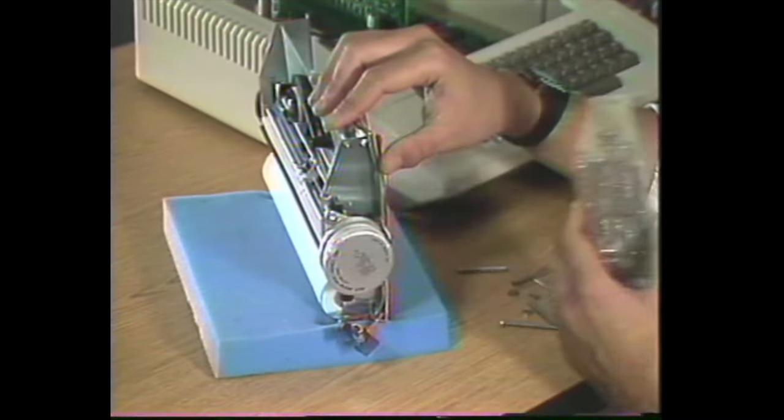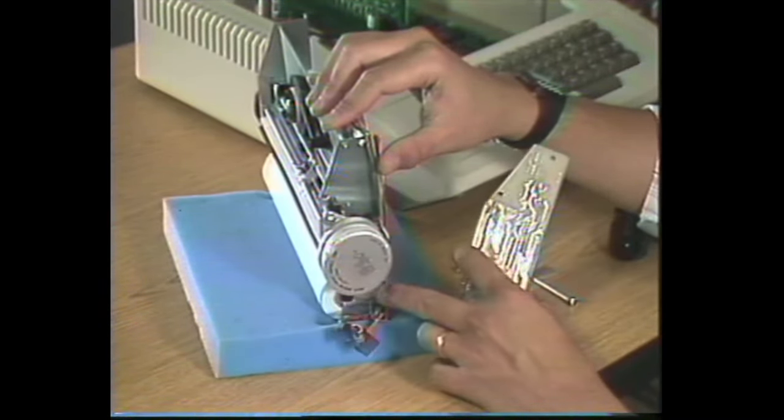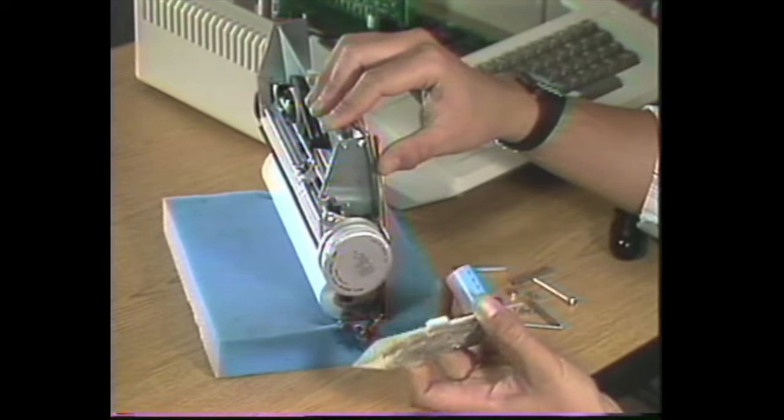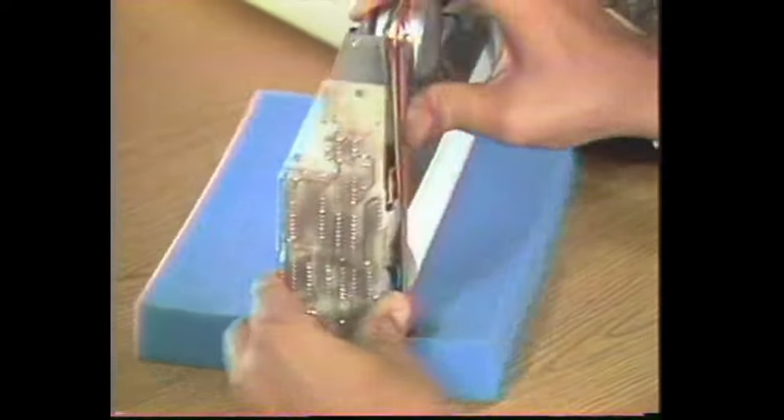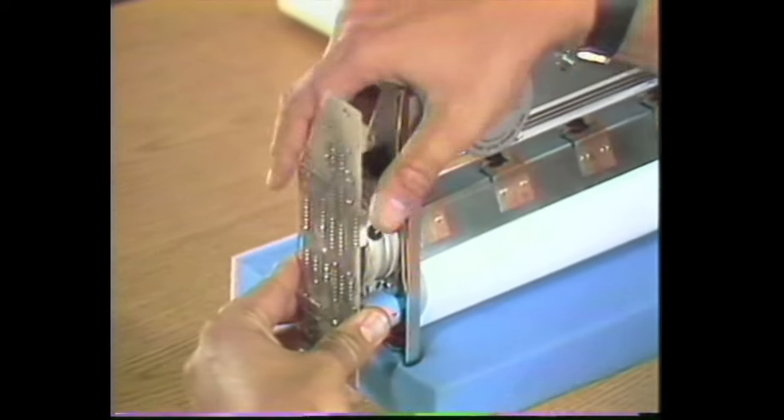First of all, when you're putting the card back on, be careful not to catch these wires here behind this capacitor. They should lay in the track along the side of the chassis here and below the capacitor like this.